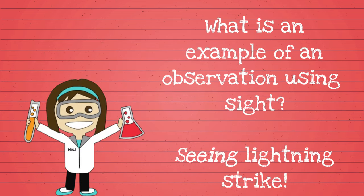Using our sight means that we are making an observation with our eyes. When we see lightning strike, for instance, we're gathering information about what the weather is like outside.